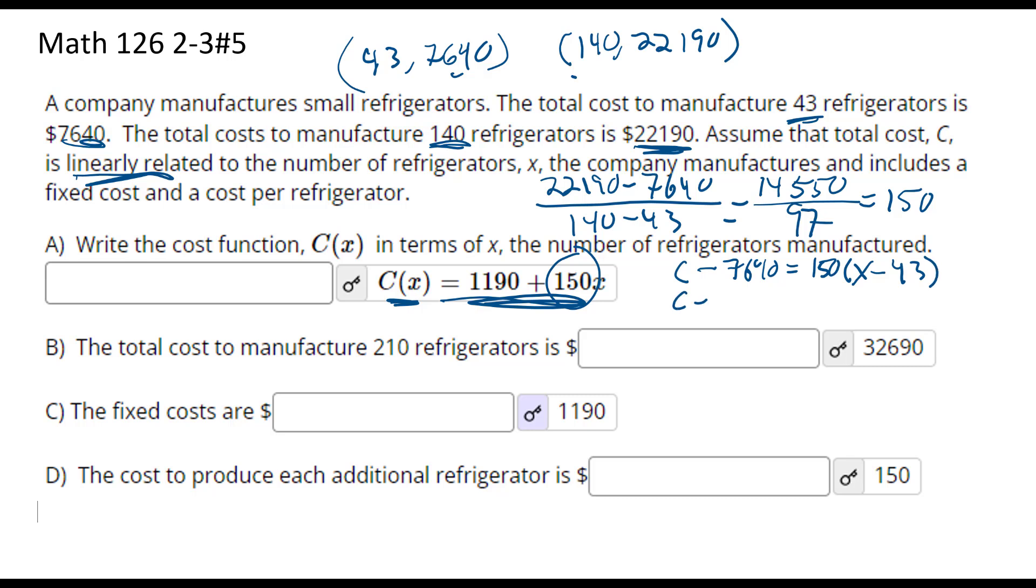So C minus 7640 equals 150X, and then we have 150 times 43, so minus 6450. Then we add 7640 to both sides.